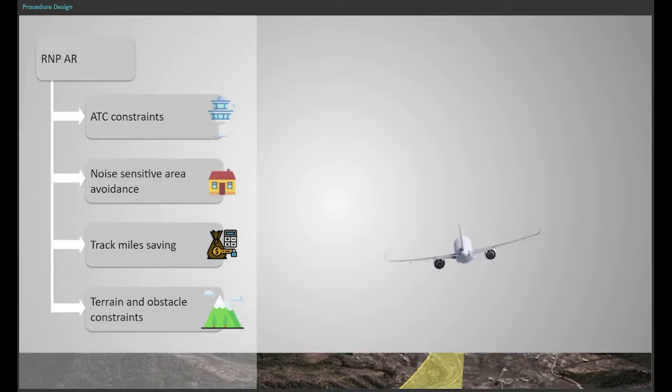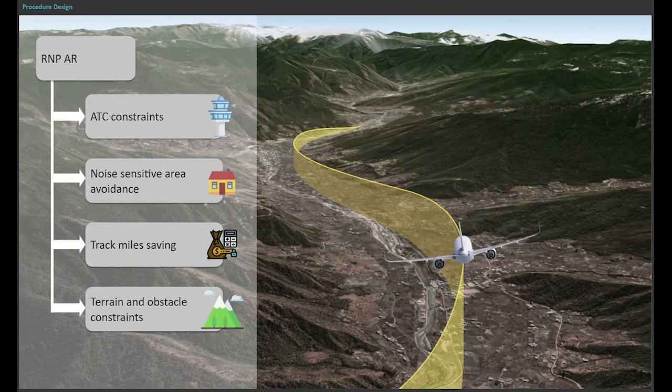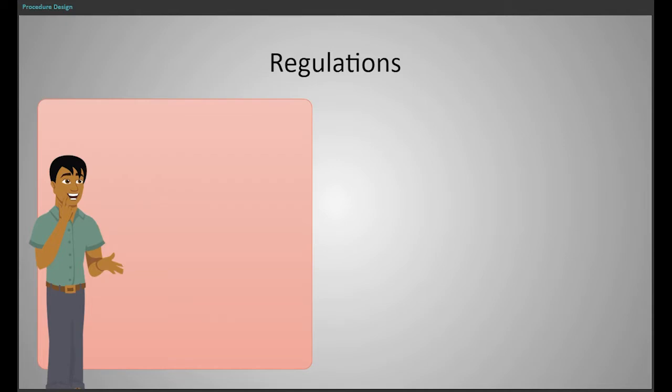RNP-AR trajectory is based on an infinite combination of turning and straight legs for procedure design. The standards and recommended practices in ICAO document 9905 must be followed to design RNP-AR approach procedures.